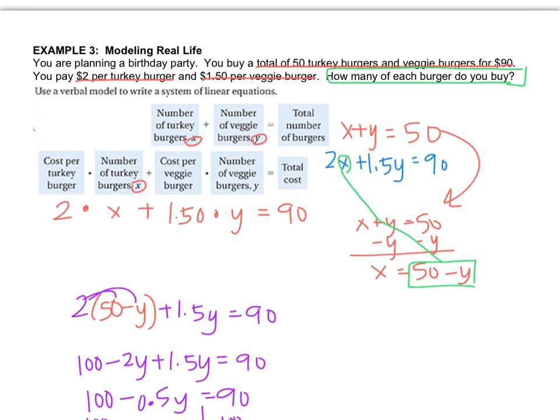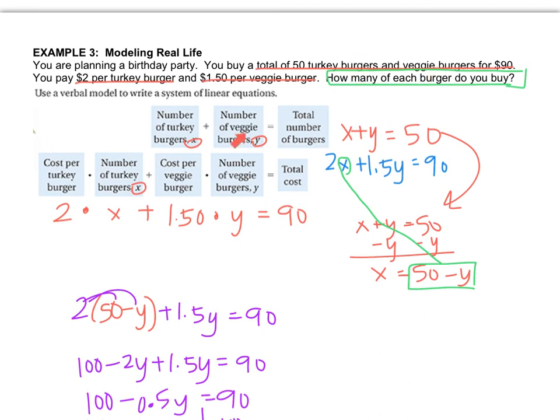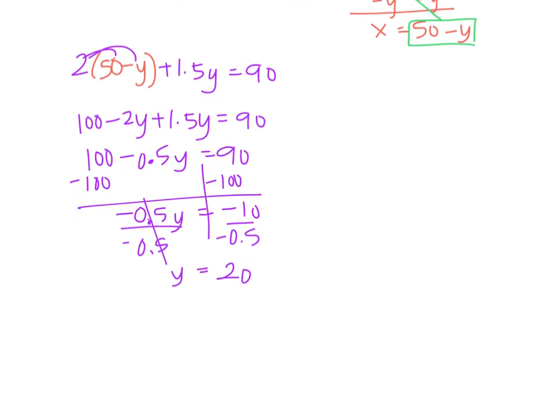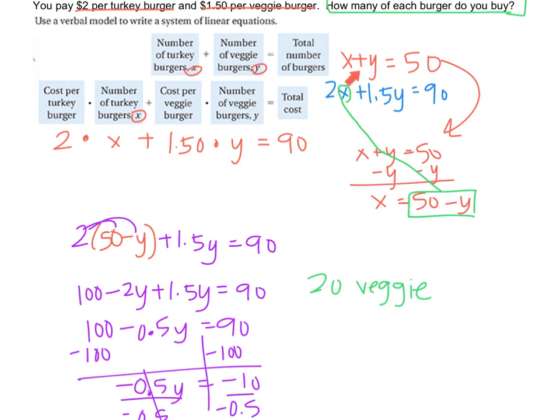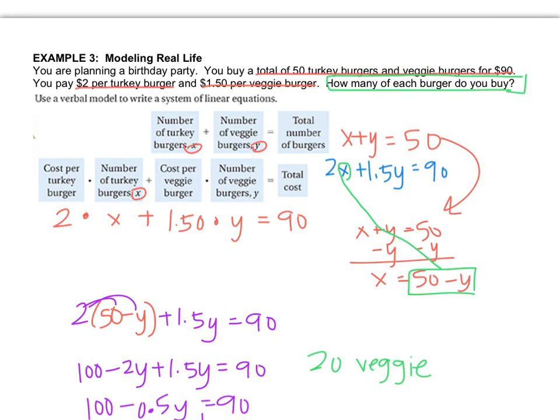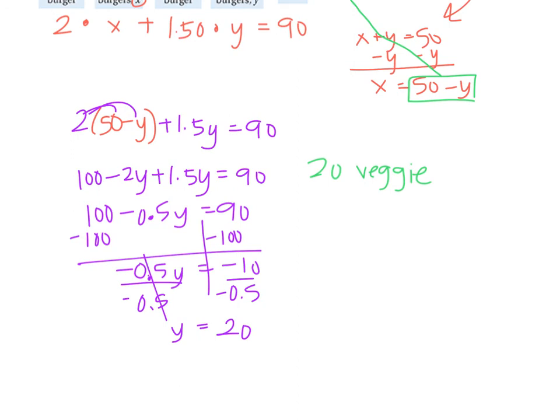Is that the question? It says how many of each burger did you buy? So I've got 20 veggie burgers. And the way you figure out the other one is you take one of your equations and you solve for the other variable. Now, you might not need to because if it says that the total number of burgers you bought is 50, you could probably do that in your head and say that means you got 30 turkey burgers. Or you can use one of the equations like we did to figure it out. So if there are 50 total burgers, then that means that there were 20 veggie and then there must have been 30 turkey. If you have any questions, write them down and ask me when you come to class.